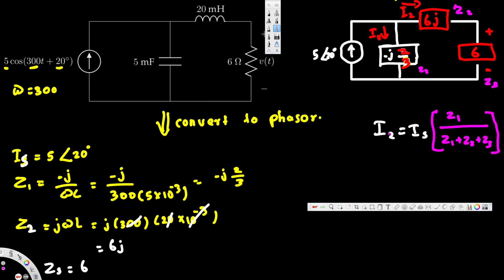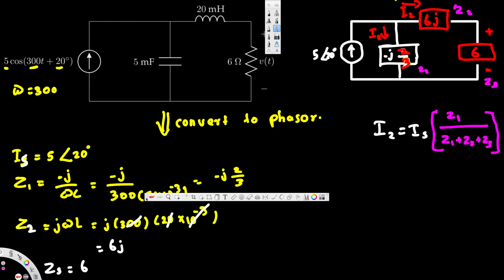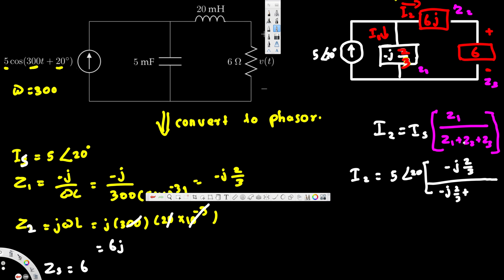Let's plug in the values. I2 equals 5∠20 times Z1 (which is negative j·2/3), divided by Z1 + Z2 + Z3, that is (negative j·2/3) + 6j + 6. If you calculate this, you get 0.4152∠−111.634 degrees. This is the current through that branch.